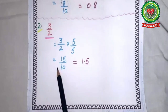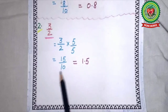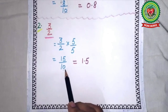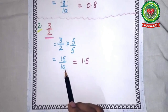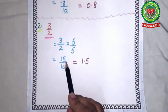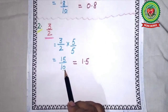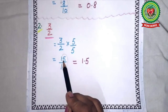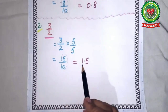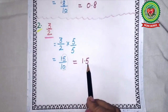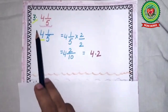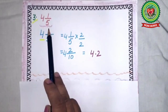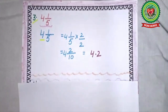Now we will convert it into decimal. Number of zeros: 1. We will shift the point by one digit to the left, and the point will come in between 1 and 5. So the answer is 1.5. The third sum is 4 whole number 1 upon 5.